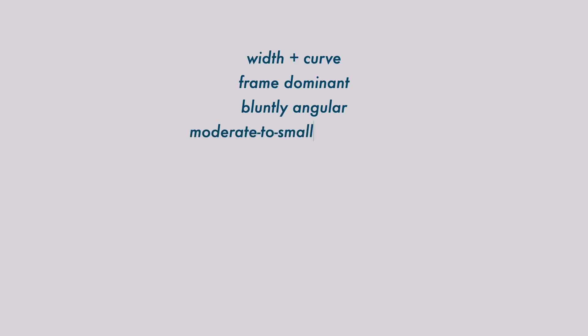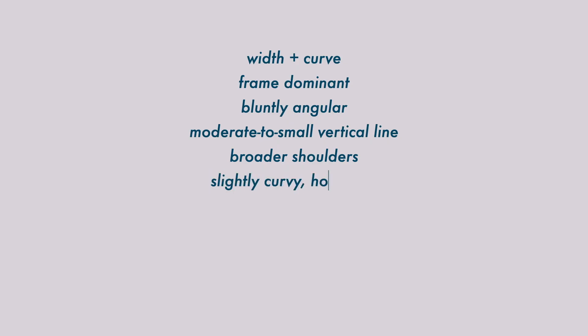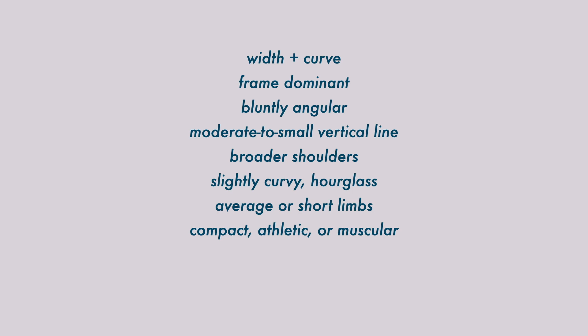She has a moderate to short vertical line, slightly angular bone structure, and somewhat square or broad shoulders. She's a bit soft and may have a small waist in comparison to her bust and hips, appearing slightly curvy — a gentle hourglass. Her arms and legs tend to be average or slightly short, and she may even appear compact or muscular. Her facial features are full and rounded, with rounded eyes, full lips, soft cheeks, and a nose that may be small and wide or slightly blunt and wide.